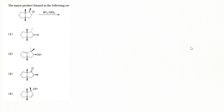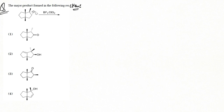Here is another question from the CSIR NET December 2019 exam. The question asks for the major product formed in the following reaction. We see an epoxide reacting with a Lewis acid, BF₃ — trifluoroborane. Since it is a Lewis acid, it will accept electron density from the oxygen of the epoxide. You can pause the video and try this yourself.